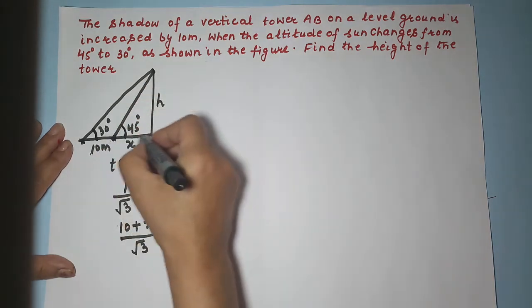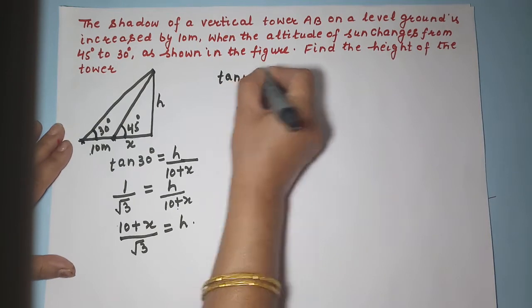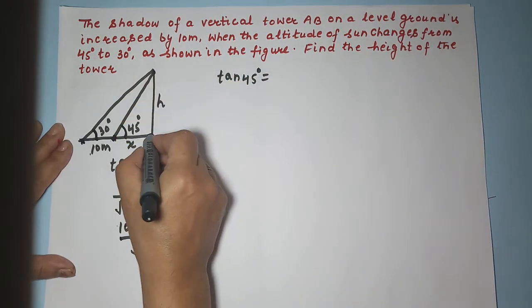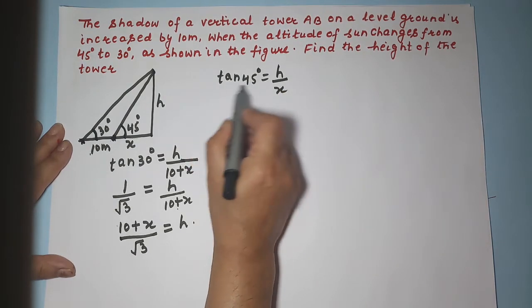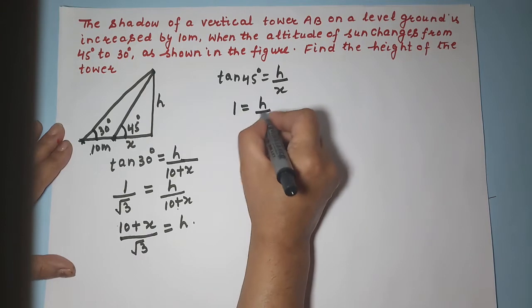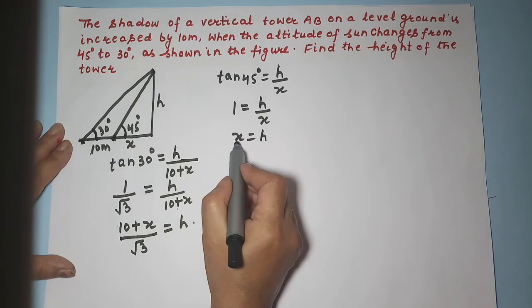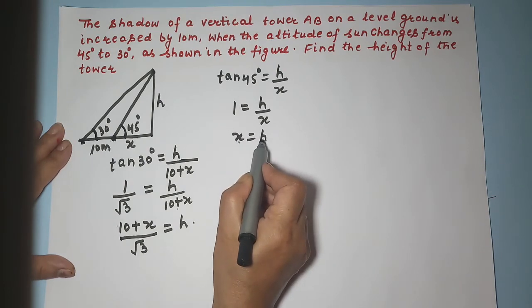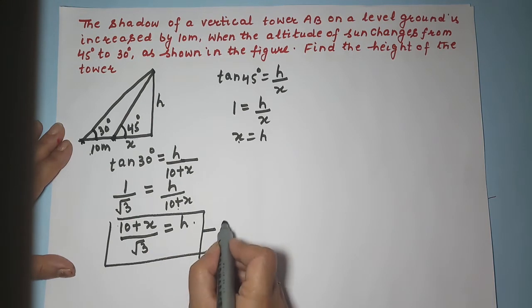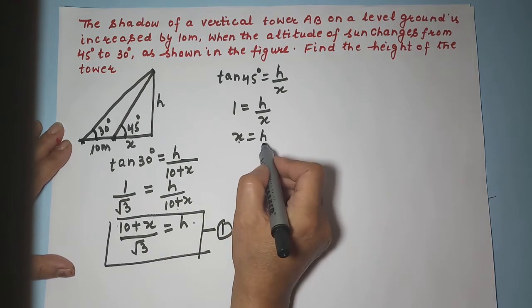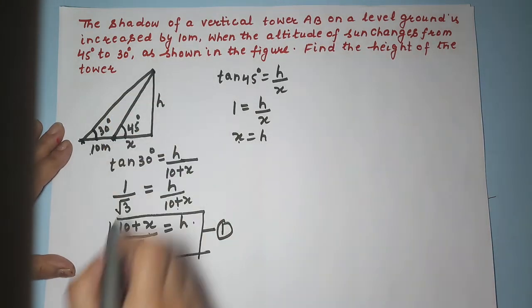Now using the smaller triangle with tan 45 degrees: tan 45 equals H upon X. Since tan 45 equals 1, we get 1 equals H upon X. Cross multiplying gives X equals H. So we have the value of X as H.